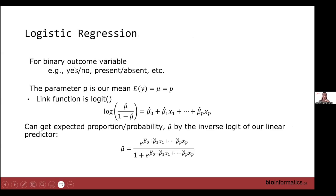Taking a closer look: logistic regression is used for binary outcomes — yes/no, present/absent, alive/dead. P, the probability of the event occurring, is our outcome of interest. Using the logit link, log of mu over 1 minus mu equals our linear predictor. When we fit this regression, everything is interpreted in terms of the log odds, because P over 1 minus P is called the odds of the event happening. So beta-1 tells us the expected increase or decrease in the log odds when we increase X by one unit.